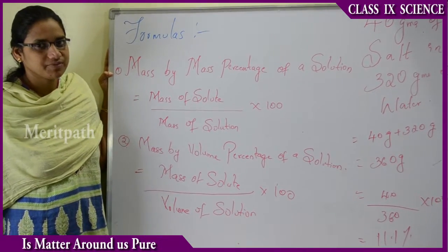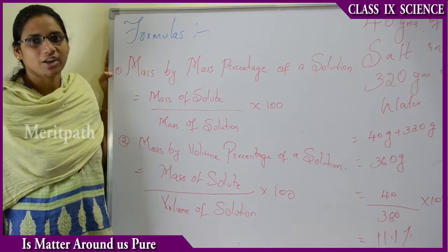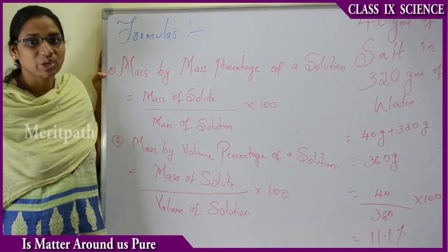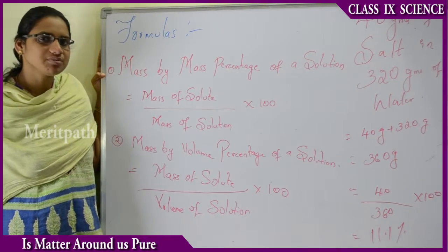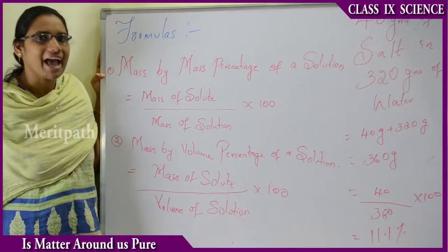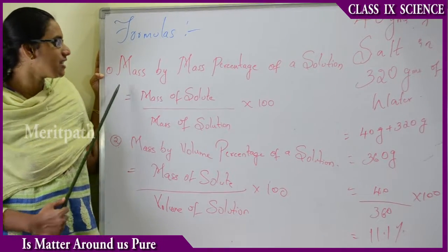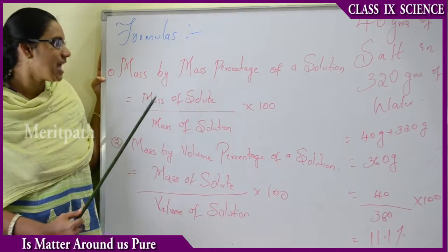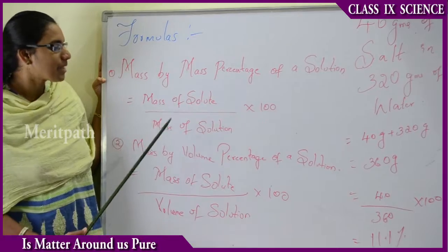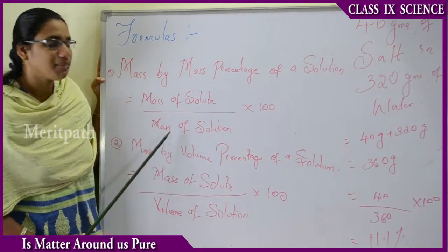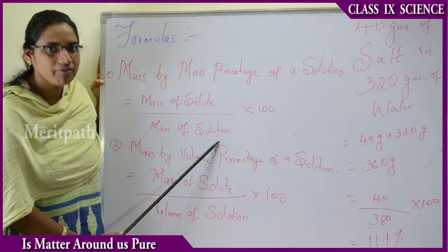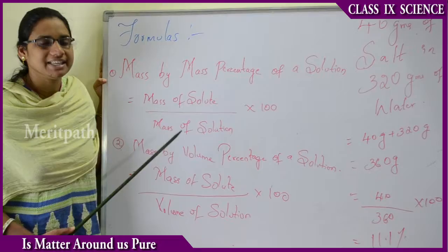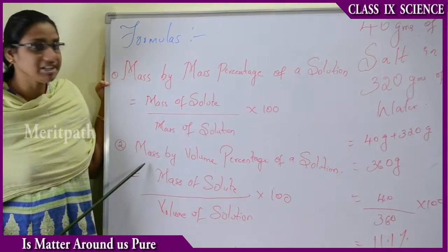Previously we have seen different types of solutions such as dilute solution and concentrated solution, and the formula for concentration of a solution is the amount of solute in the solvent. There are different types of formulas according to the mass and volume of the solution. The mass by mass percentage of a solution is mass of solute divided by mass of solution, into 100. The mass of solution equals mass of solute plus mass of solvent.